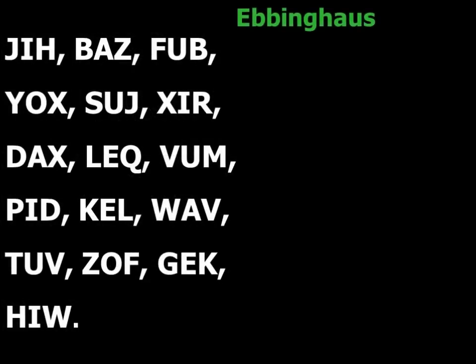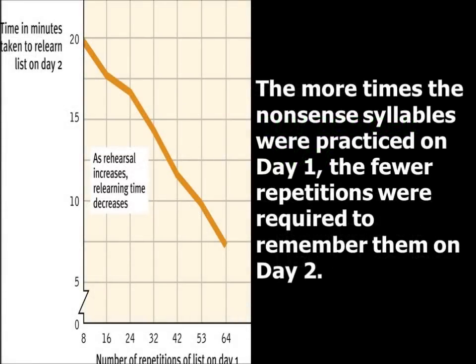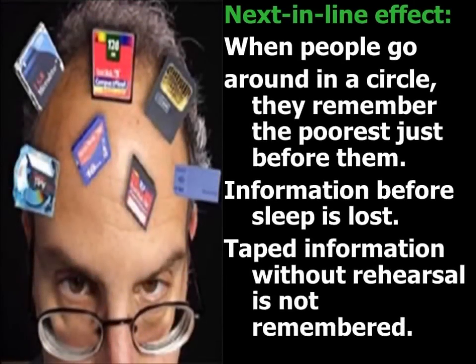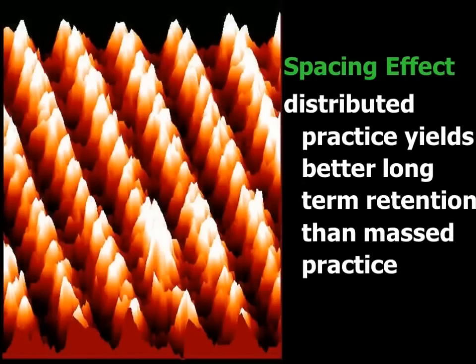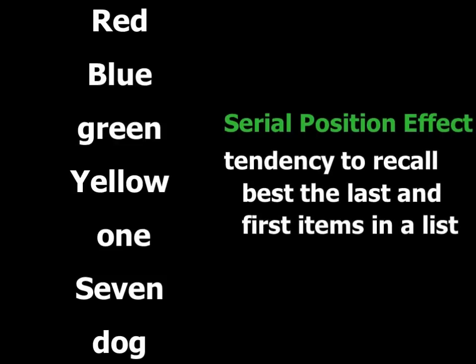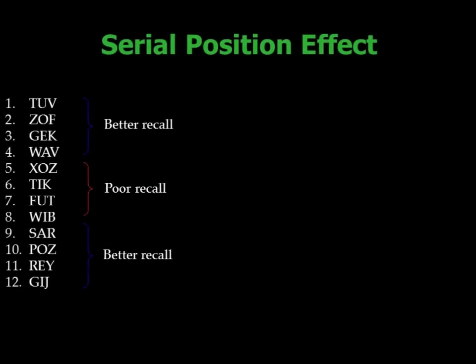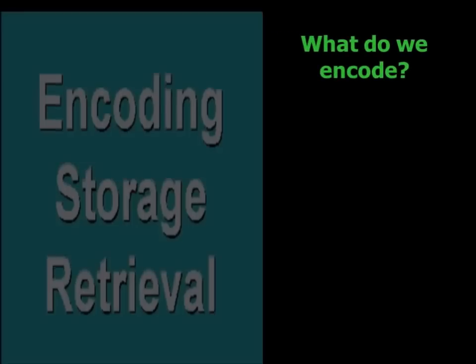We looked at different types of memory — implicit and explicit memory. When we talked about Lashley and the rats and where memory is housed, what we found is that the hippocampus stores explicit memories more specifically. The left side of the brain is used for language and the right side for visual processing. So damage to the left side of the hippocampus affects verbal memory, and the right side affects visual memory.